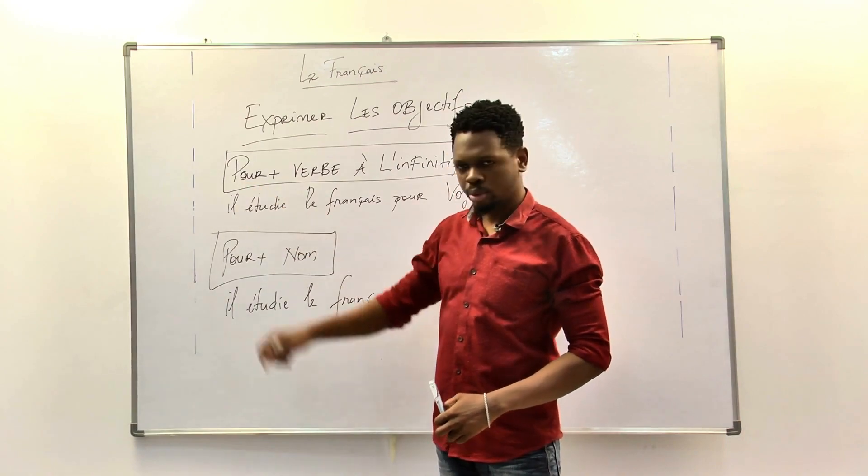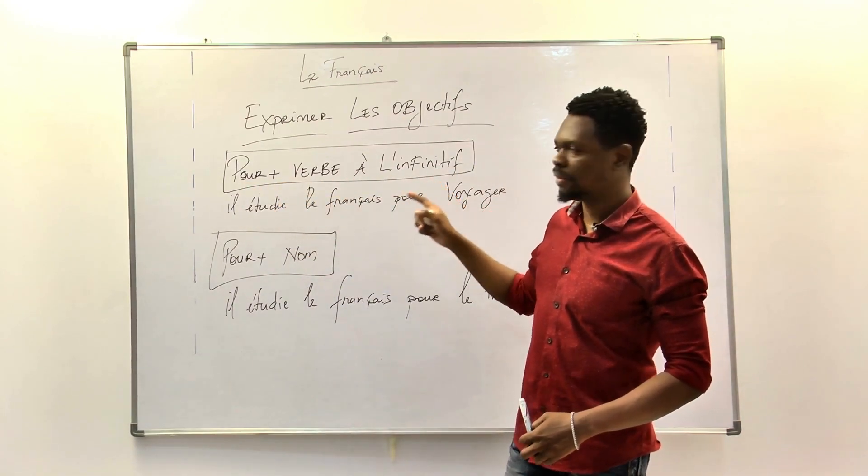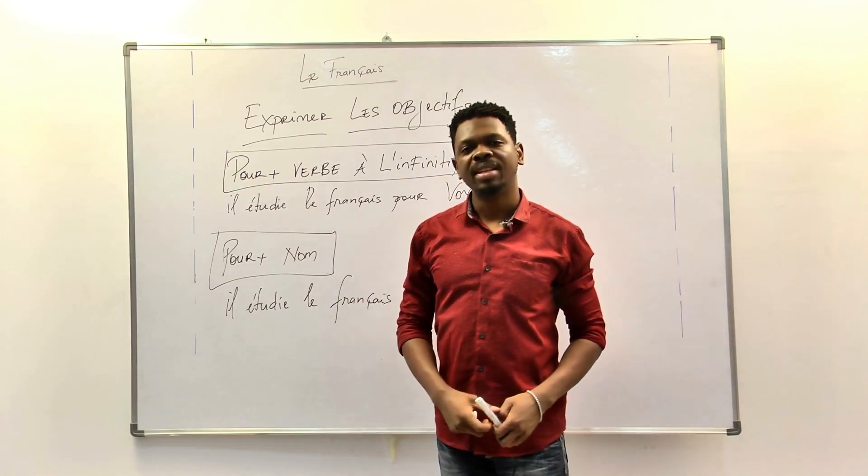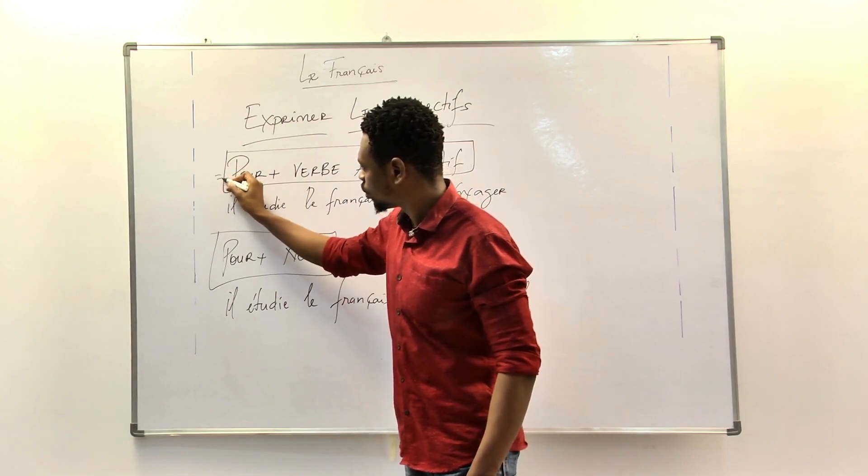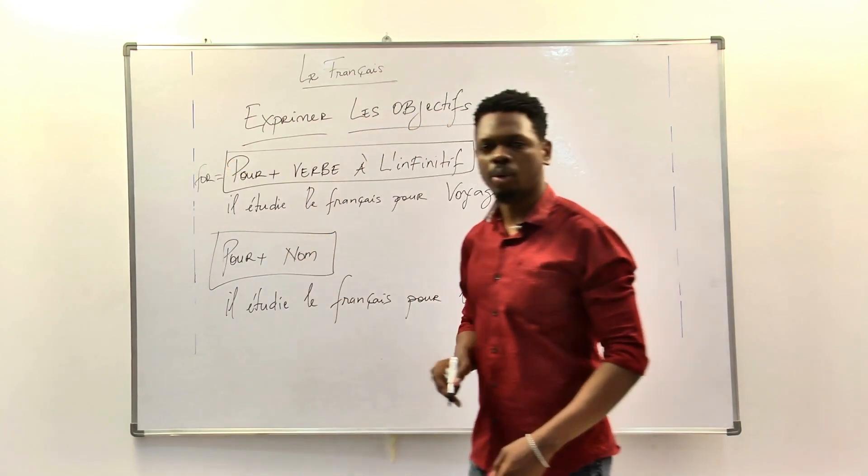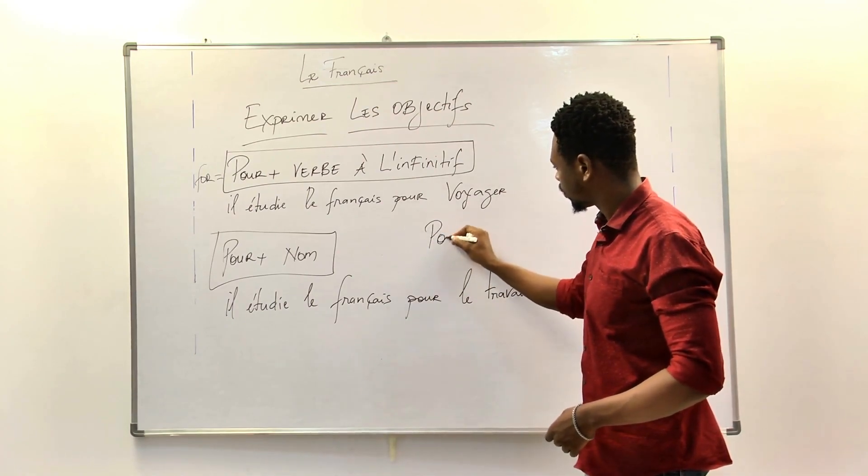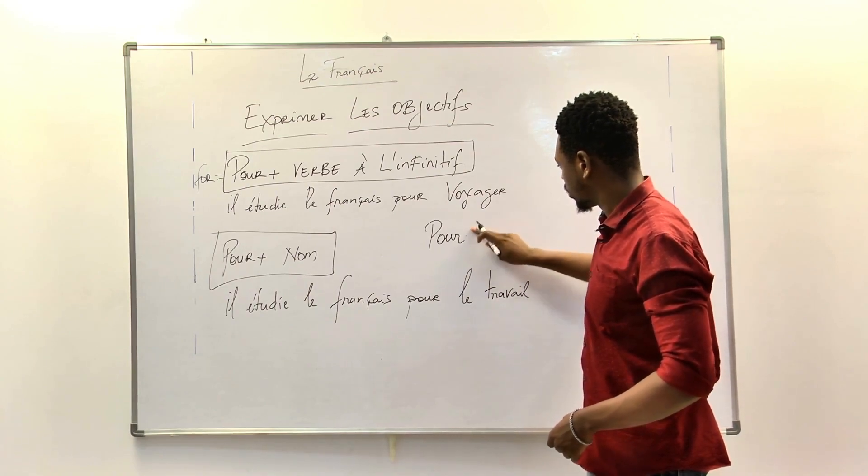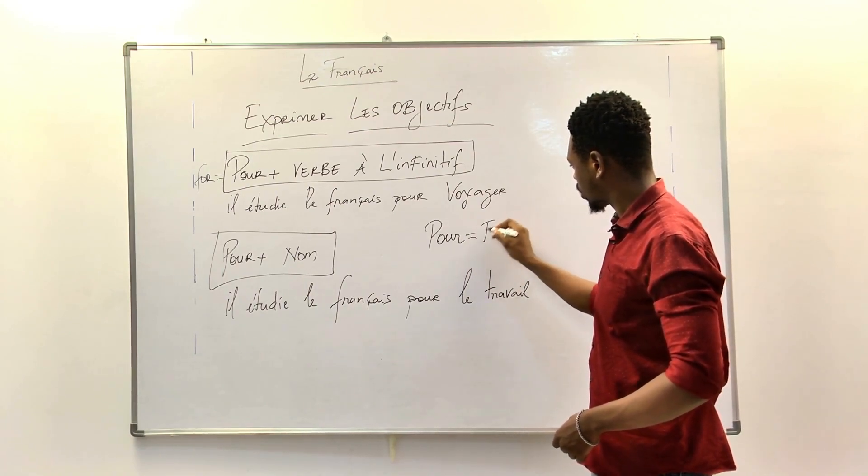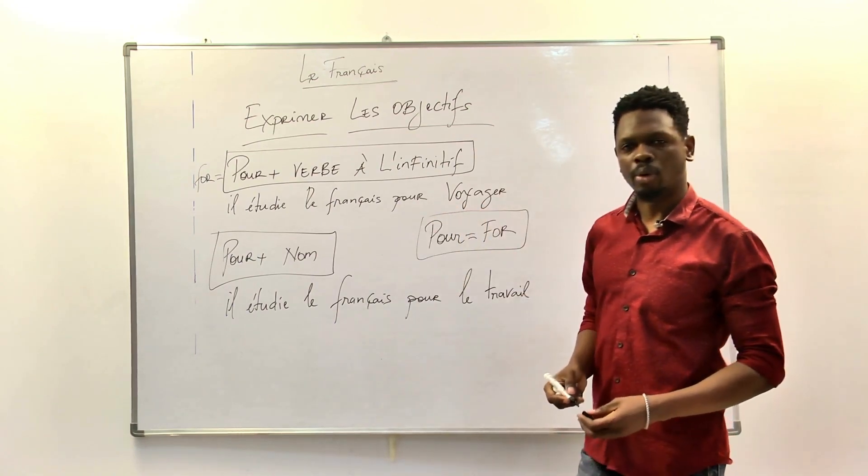We have pour plus verbe à l'infinitif. Pour means for. Pour is equal to for. I will put it here.